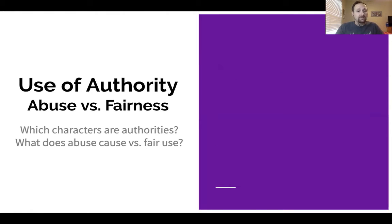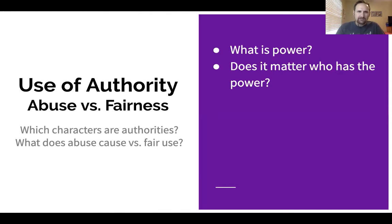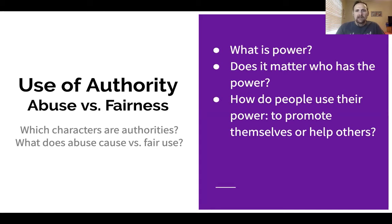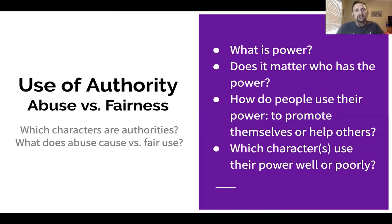Next up: use of authority — abuse versus fairness. Which characters are authorities in this novel? Which characters have power over other characters? What does abuse of that power cause versus the fair use of it? Power is basically being able to hold sway over somebody else or some situation. Does it matter who has the power? Does the fact that certain characters have more power than others change what happens? How do people use their power — do they promote themselves or do they try to help others? What is Steinbeck trying to tell us about the use of power and the correct use of power?